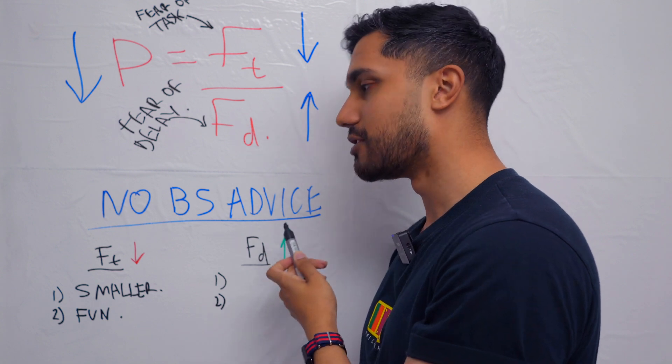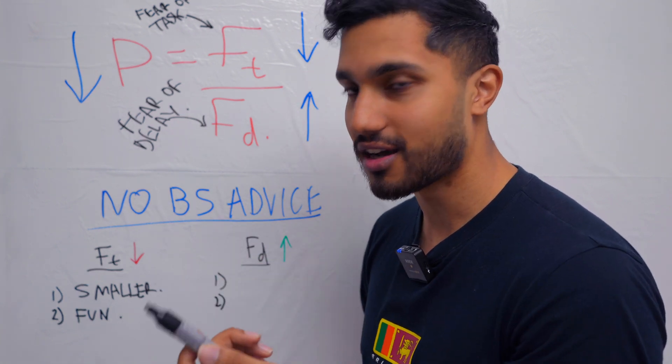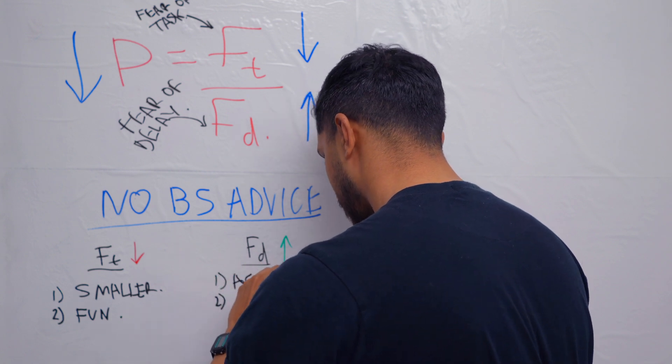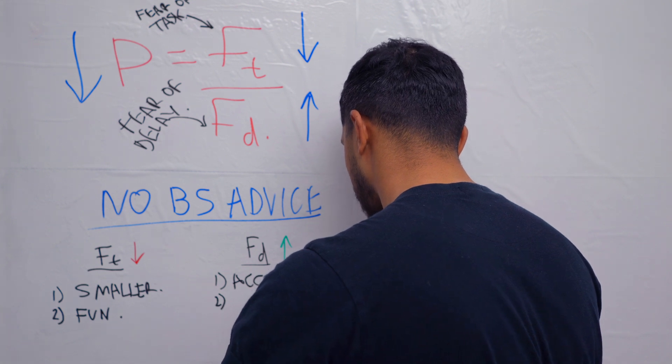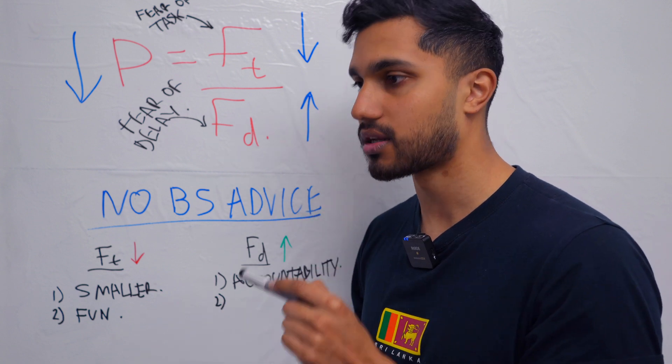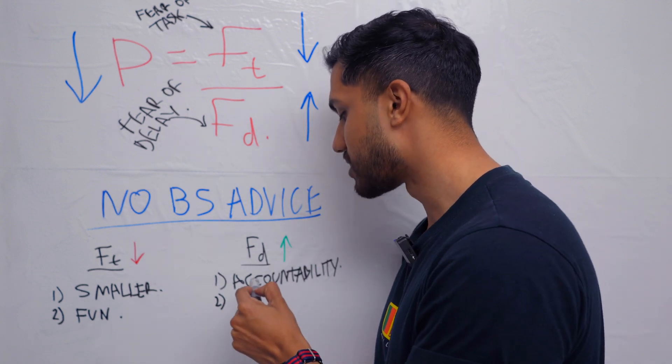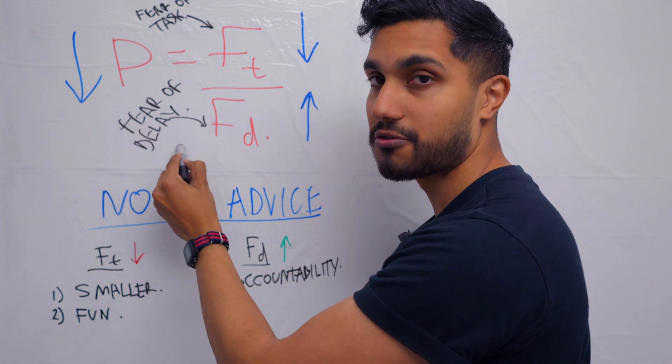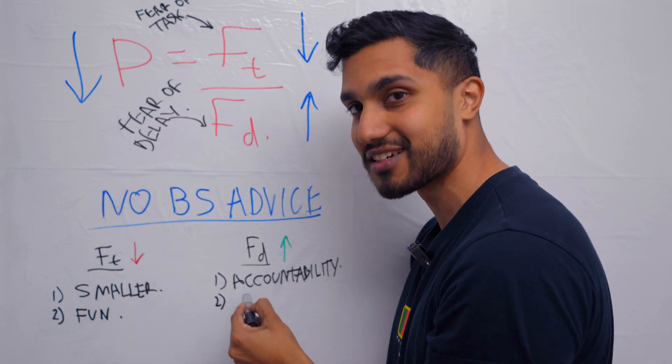Now, how do you increase the fear of the delay? The first thing you can do, which you've obviously heard before, is to have some accountability. If you tell somebody that you respect, because if you tell somebody that you don't respect, you won't care if they think about you worse, but it has to be someone that you truly, truly respect.